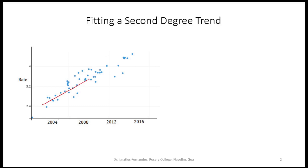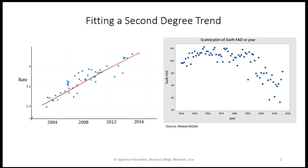In case the data itself does not follow a linear trend, then there is no point fitting a line. For example, if you consider this plot, we cannot say that the time series behaves linearly because we see a sort of curve here. In that case, instead of fitting a line, we would recommend fitting a curve — a parabolic trend. So in case the data behaves like this, we fit a parabolic trend to the time series.